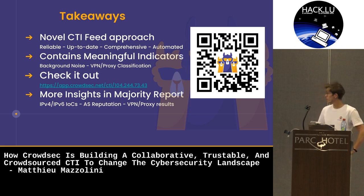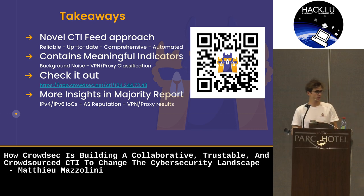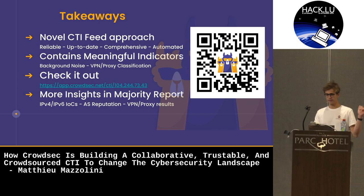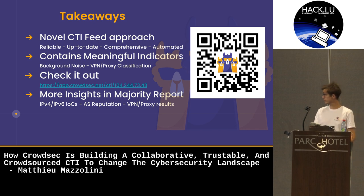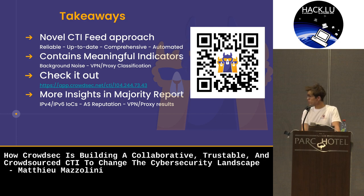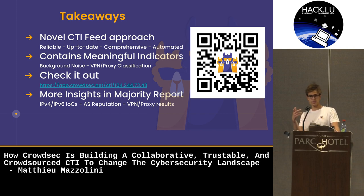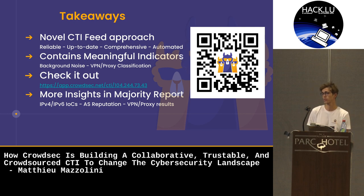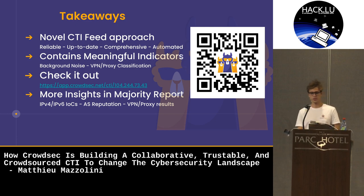We've reached the end of the presentation. Here are the key takeaways: CrowdSec brings a novel CTI feed approach based on open source software. The CTI feed is reliable, up-to-date, comprehensive, and automated. You can find the CTI at the listed address, and it contains meaningful indicators like the background noise score and VPN/proxy classification. If you enjoyed the analysis, scan the QR code to download what we call the Majority Report, released recently — it contains diverse analysis regarding IPv4 and IPv6, AS reputation, and the results of our VPN/proxy classification. Thank you for listening, I'm available for questions.